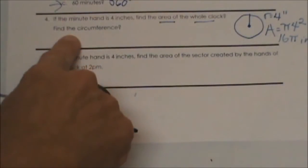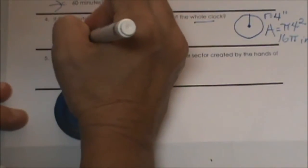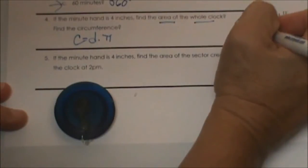What would the circumference be? Circumference is what formula? D π. If our radius is 4, what is our diameter? 8.